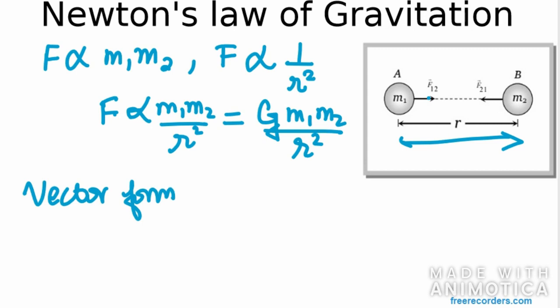So first of all, I would be defining, as you can see, we have a F12 force here. So I would be defining F12 first in vector quantity. So I would be taking G·m1·m2, and we have a unit vector here, that is r̂21.